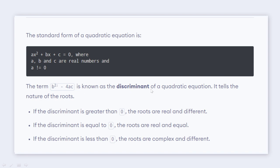known as the discriminant of a quadratic equation. It tells the nature of the roots: if the discriminant is greater than 0, the roots are real and different; if the discriminant is equal to 0, the roots are real and equal; if the discriminant is less than 0, the roots are complex and different.